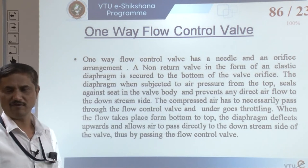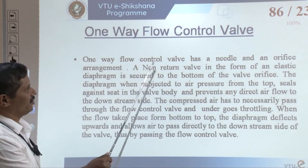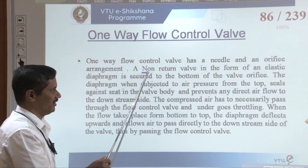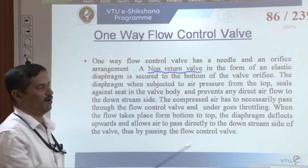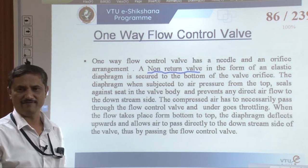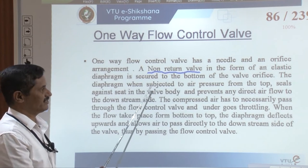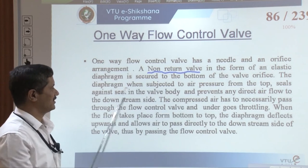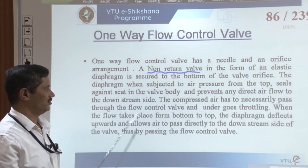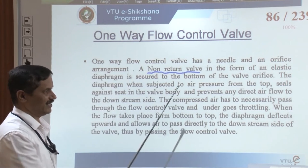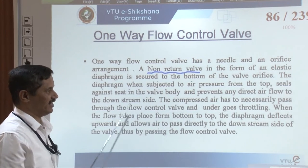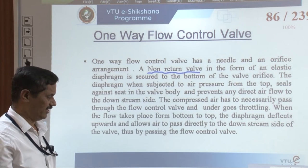The one-way flow control valve has a needle and an orifice arrangement and a non-return valve in the form of an elastic diaphragm secured to the bottom of the valve orifice. The diaphragm, when subjected to air pressure from the top, seals against the seat in the valve body and prevents air flow to the downstream side. From the other side, it lifts up and moves easily. We will see how this valve works constructionally in the subsequent slides.